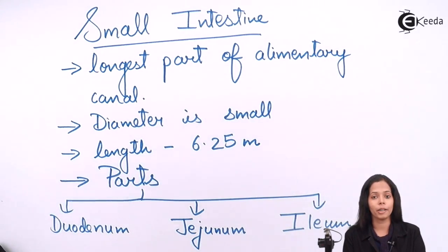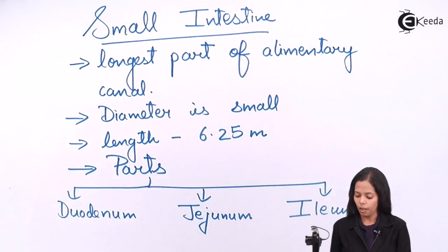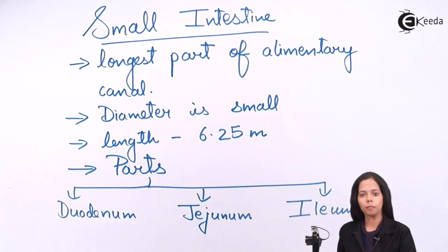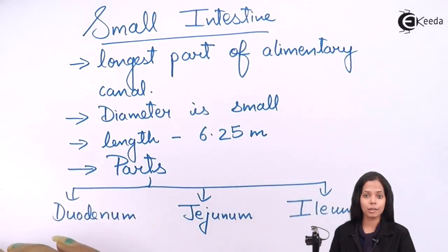Speaking about duodenum, jejunum, and ileum, they are coiled structures, convoluted structures present in our abdominal cavity. The inner lining of all these three parts consists of villi-like structures. That villi-like structure helps to increase the surface area for absorption. I will show you with the help of a diagram how this villi looks.